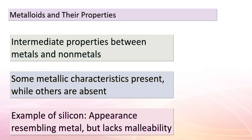Today, we're delving into an intriguing topic: metalloids. These elements exhibit a unique set of properties that lie between those of metals and non-metals — think of them as having a blend of both characteristics. For example, silicon appears to have the visual appearance of a metal. But here's the twist: it's actually brittle, not malleable like typical metals, and its ability to conduct heat and electricity isn't as impressive as that of metals. Metalloids like silicon bridge the gap between metals and non-metals.